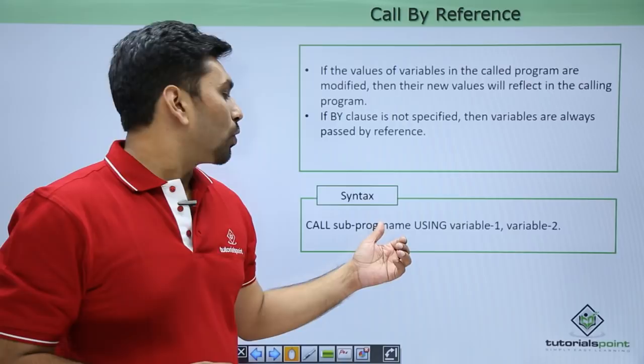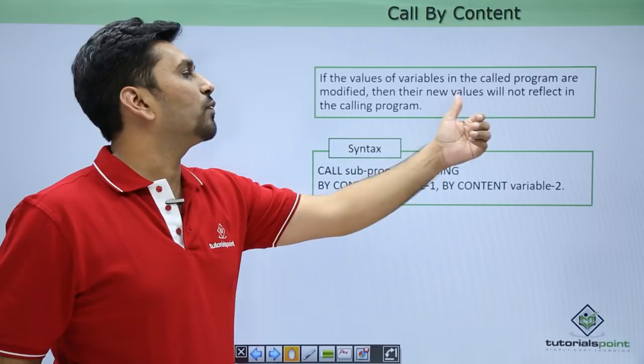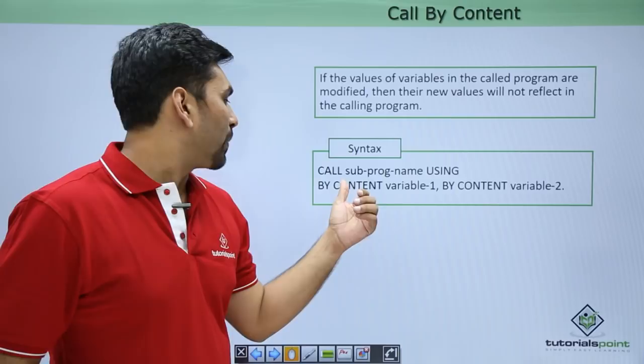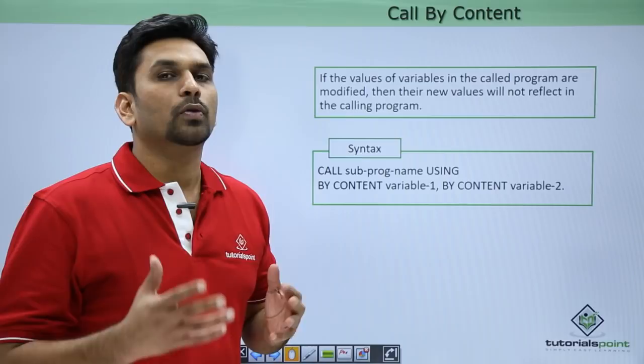Call by content means if the values of variables in the called program are modified, their new values will NOT reflect in the calling program. The syntax is: CALL [subprogram] USING BY CONTENT variable1 BY CONTENT variable2. If we are modifying the values of variable 1 and variable 2 in the called module, their modified values will not reflect in the main module.